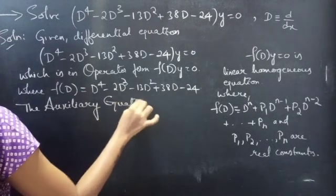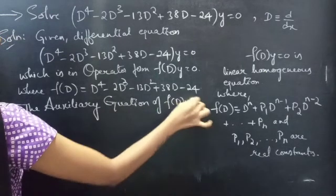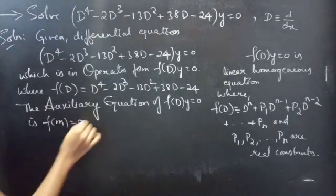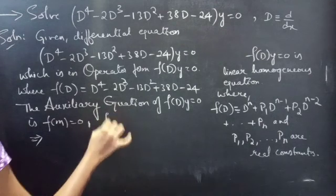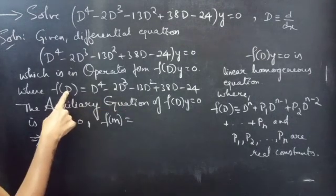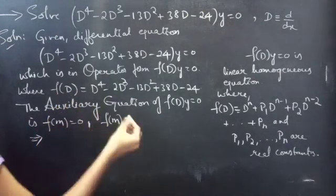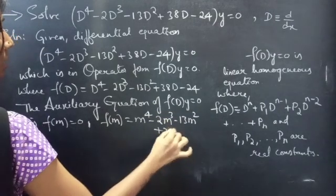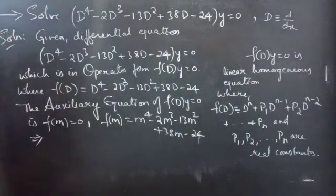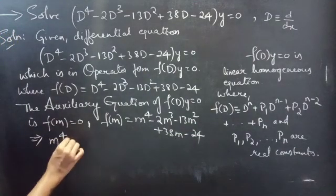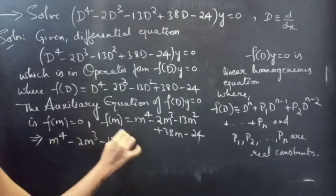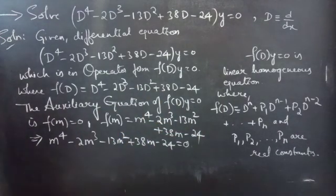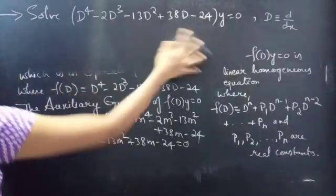The auxiliary equation of f(d)·y = 0 is f(m) = 0. Here we replace the differential operator d by m, giving f(m) = m⁴ - 2m³ - 13m² + 38m - 24. So our auxiliary equation will be f(m) = 0, and now we are going to find the roots to this auxiliary equation.